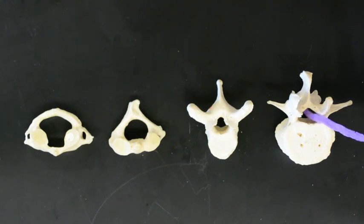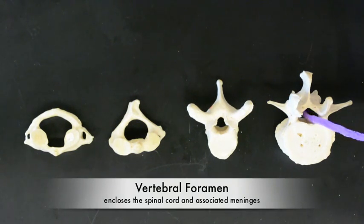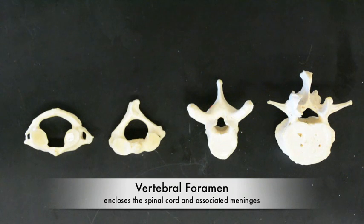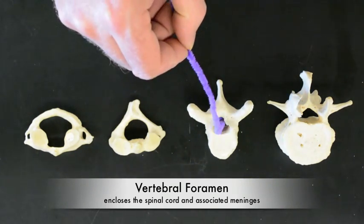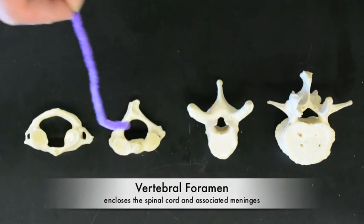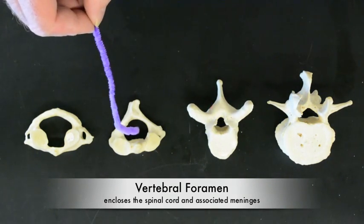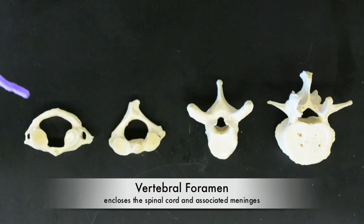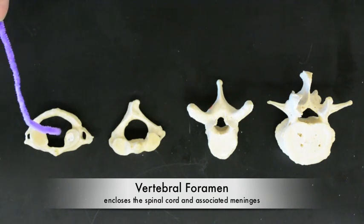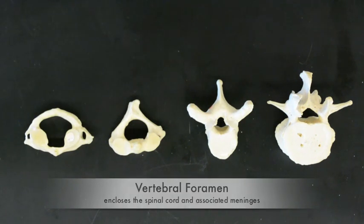The hole that the spinal cord runs through is called the vertebral foramen. We can see it here on the lumbar vertebra, here on the thoracic, and it's quite obvious on Axis and Atlas.